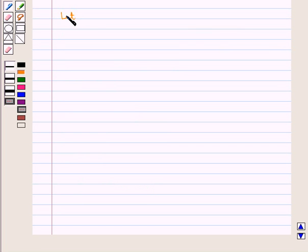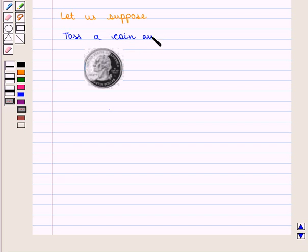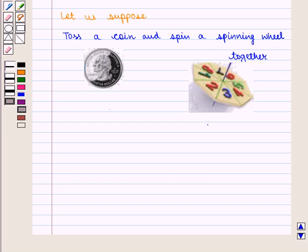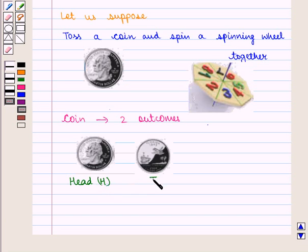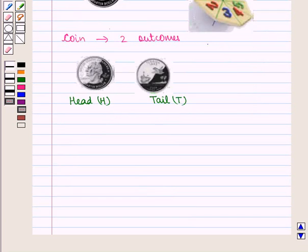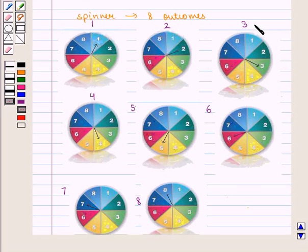Let us suppose we toss a coin and spin a spinning wheel together. Here coin has two outcomes, head and tail, and spinner has eight outcomes. That is 1, 2, 3, 4, 5, 6, 7 and 8.